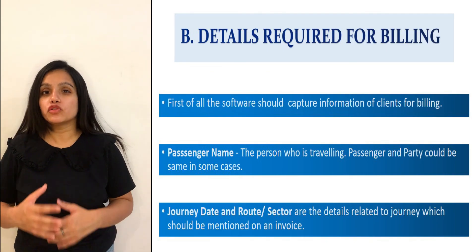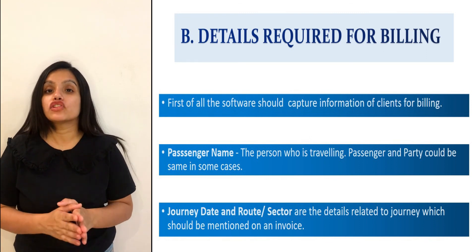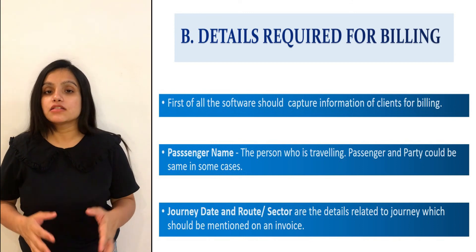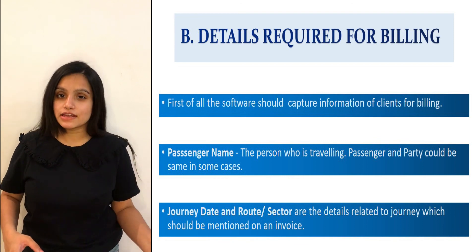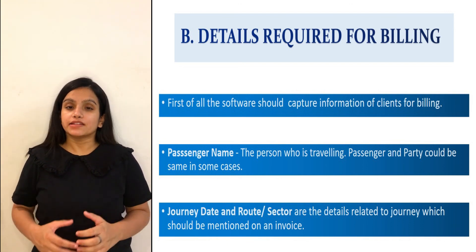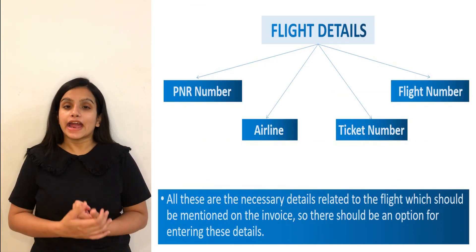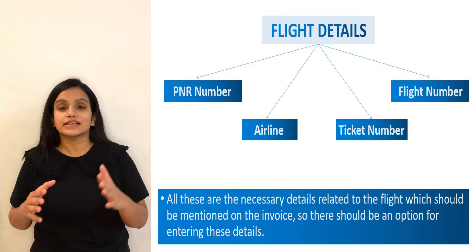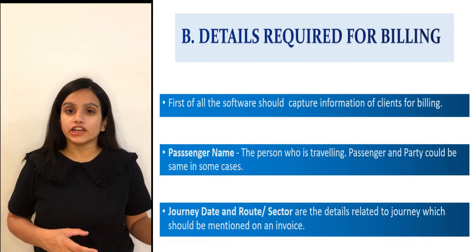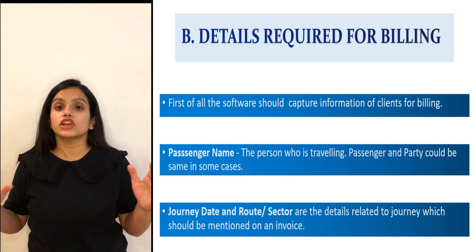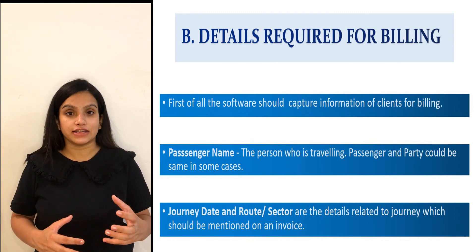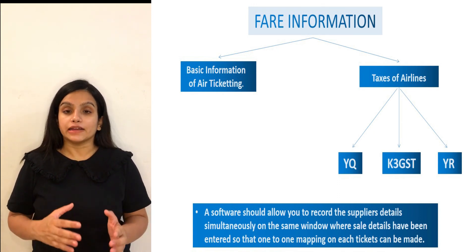The software should allow you to capture client and supplier data and then create the type of billing you want. Following are the parameters a software should have to record billing, whether domestic or international air ticketing: passenger details including the name of the passenger — a passenger and party could be the same in some cases — airline ticket number, PNR number, and flight number are flight-related details that should be mentioned on an invoice. Date of journey and place of journey or route are journey details that should also appear on the invoice.